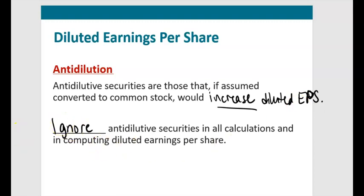This concludes our discussion of Chapter 16 and diluted earnings per share, covering convertible bonds, convertible preferreds, and the exercise of employee stock options.